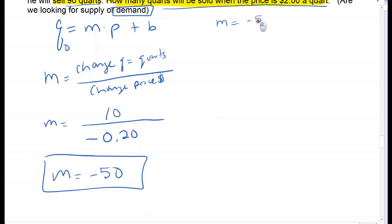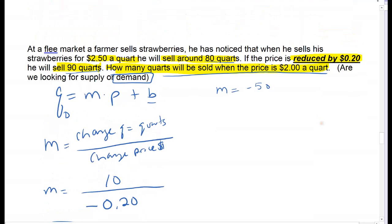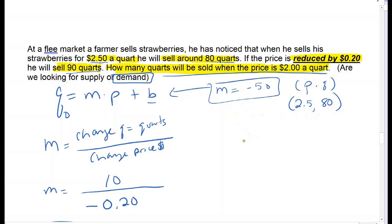Now I have slope, so I need my y-intercept, which means I need a point. Be careful: price is the x part and quantity is the y part. They gave me a price of $2.50 paired with a quantity of 80 quarts. Plug them in: 80 goes in for quantity, negative 50 was my slope, and $2.50 goes in for price. Students often either flip the slope or accidentally plug in P and Q wrong when finding the y-intercept, so be very careful.